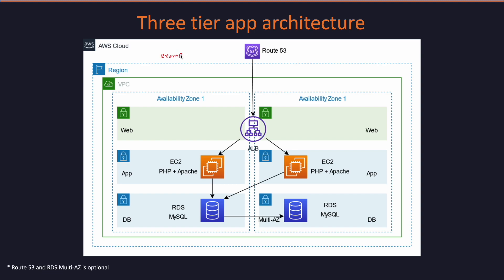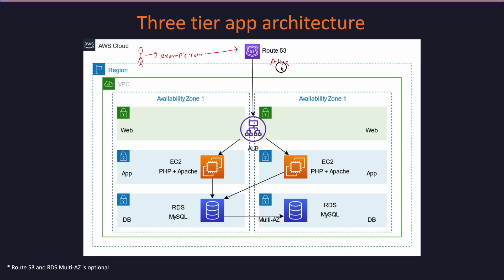Let's take a sample domain example.com. The user will hit example.com in his browser, and the request will flow to Route 53. We will create an alias record in Route 53 which will point towards an application load balancer.